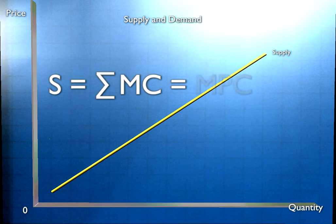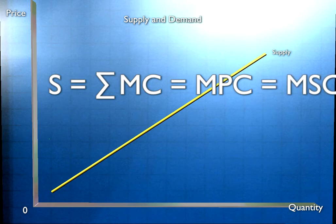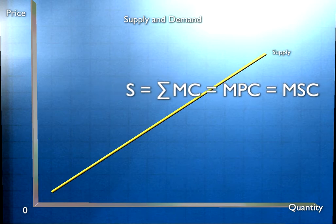So we can say marginal private cost, the cost to the firm, is the same as marginal social cost, the cost to society of each unit of output.